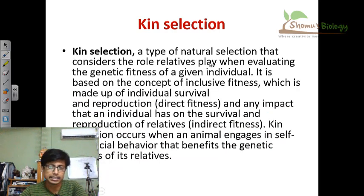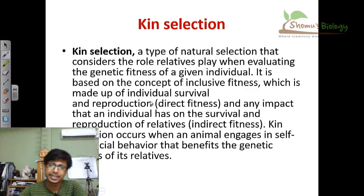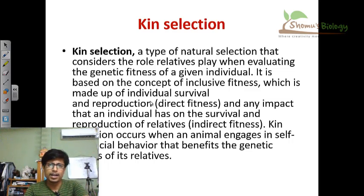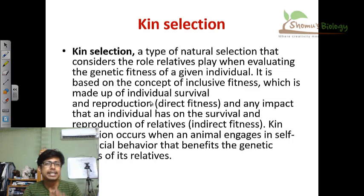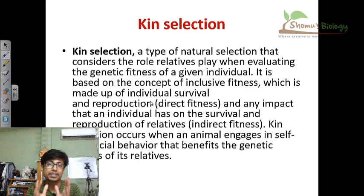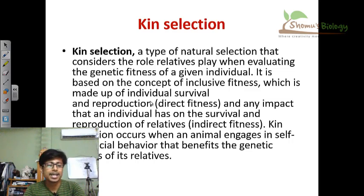This is called the direct fitness idea. In essence, kin selection is a kind of altruistic behavior — where an organism is helping others without expectation of direct return. But it's not exactly zero expectation; the expectation is that obviously the gene will be passed on and will be preserved in that individual. That's the idea behind kin selection.